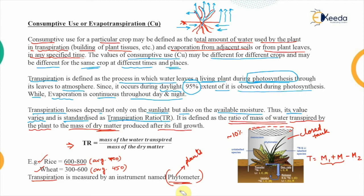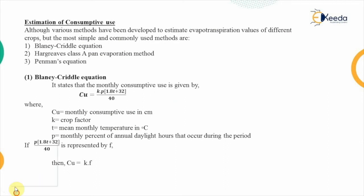This is the field method for measuring consumptive use of a plant. For the estimation of consumptive use using empirical methods, various methods have been developed, but the most simple and commonly used are three: the Blaney-Criddle equation, the Hargreaves Class A Pan Evaporation method, and the Penman's equation used for water budgeting.